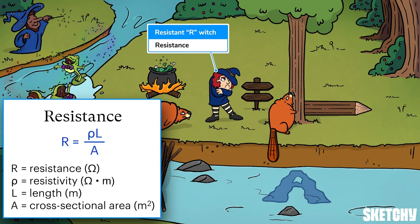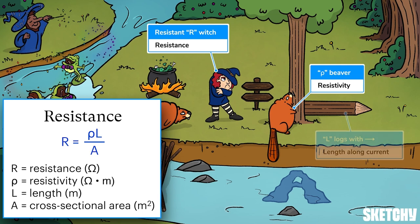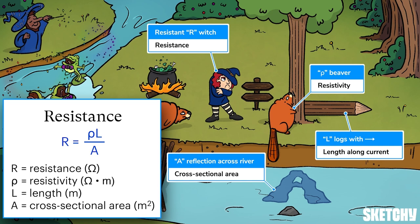We can quantify resistance using resistivity, size, and shape with the equation: Resistance R equals resistivity rho times length L divided by cross-sectional area A. Our sulking R-shaped witch stands next to an equal-sign trail post. The rho-shaped beaver represents resistivity, chewing on an upright tree trunk which, along with a fallen trunk, takes the shape of the letter L for length. The chewed end of the fallen trunk points along the riverbank to remind you that length is measured along the direction of current flow. The A-shaped reflection across the river represents cross-sectional area, and its position underneath the beaver and trunks tells you that rho times length is divided by area.